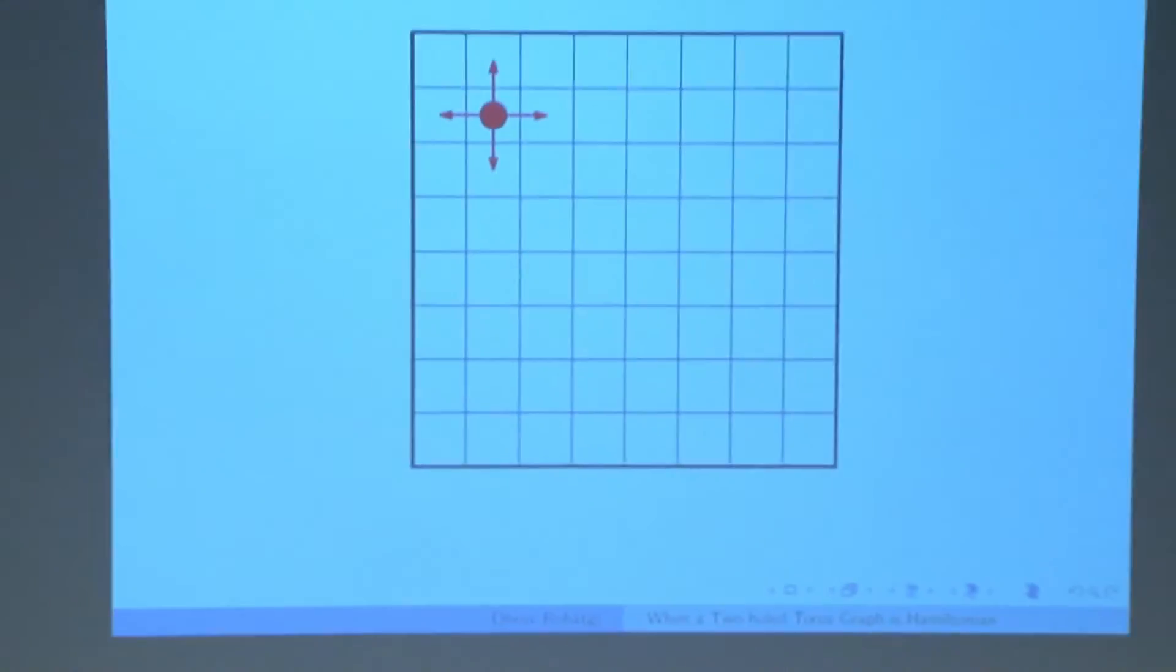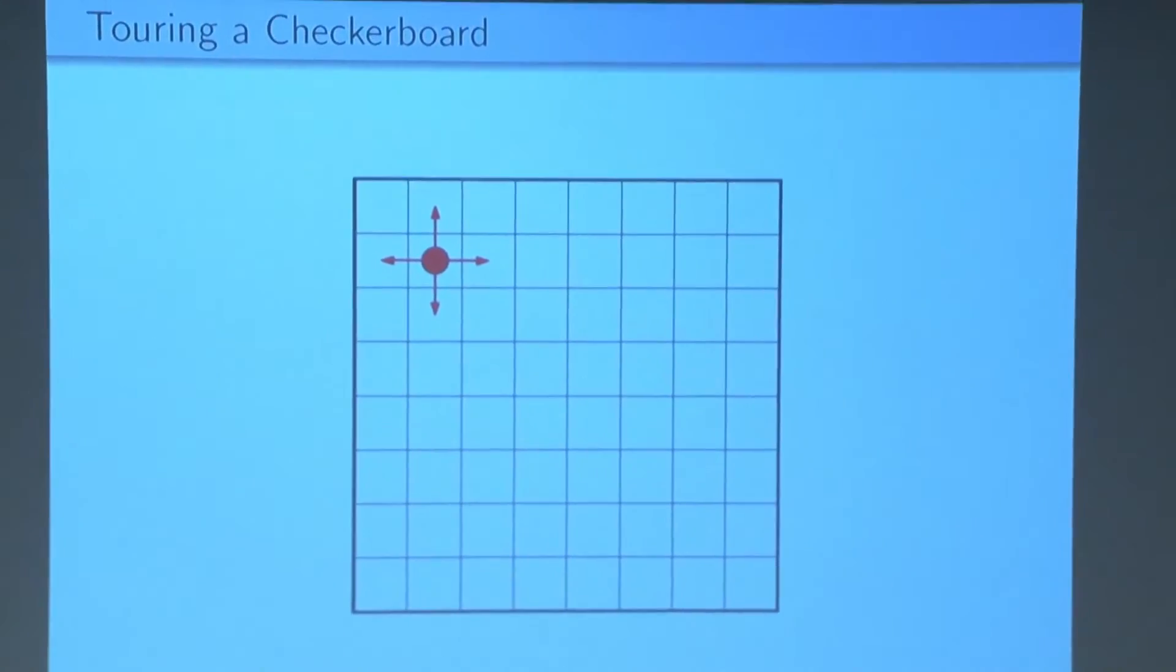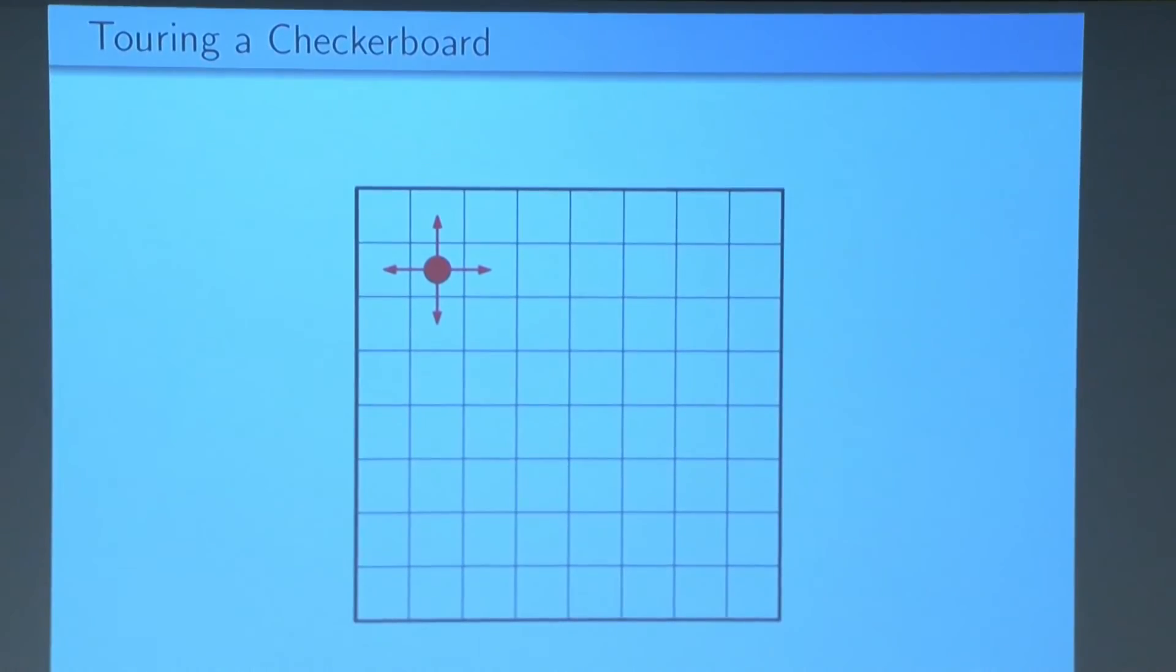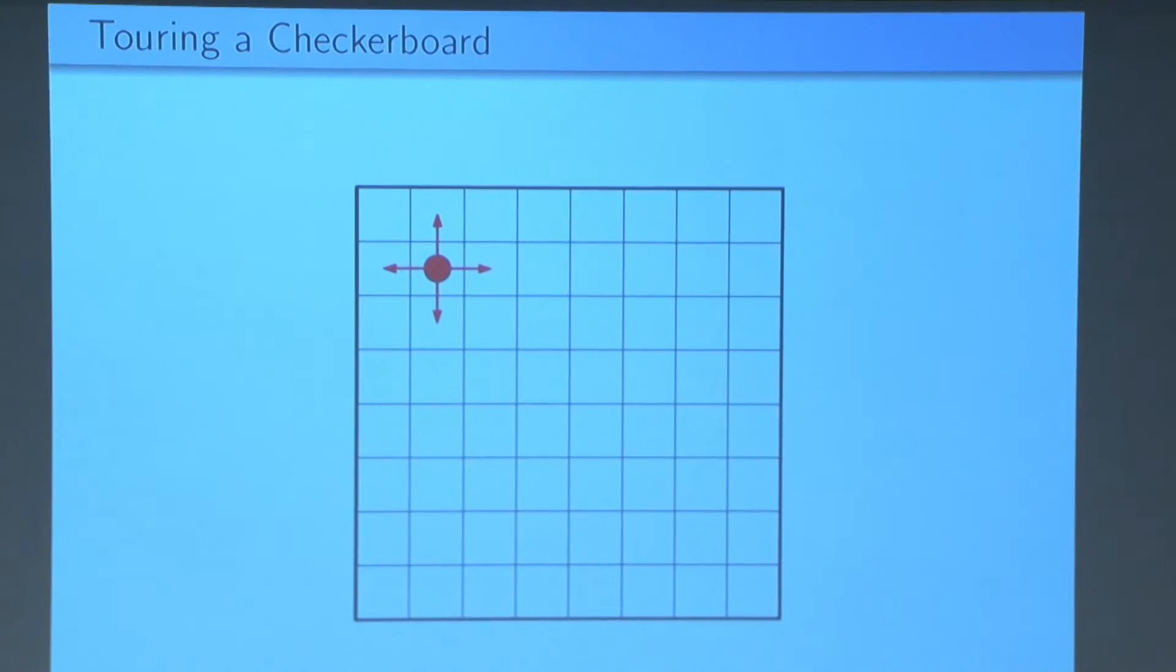So here's one question that we can ask. Is there a tour of the checkerboard? Can we move the checker in some path so it visits every cell in the checkerboard exactly once and then returns to the cell in which it started?